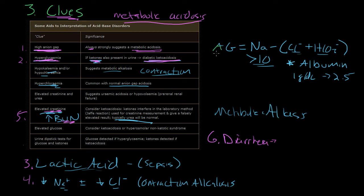One caveat to keep in mind is that whenever you are calculating your anion gap, make sure you correct for albumin. Anion gaps greater than 10 assume a normal albumin. If you have a lower albumin, for every one below four, you have to correct by adding 2.5 to your anion gap calculations.